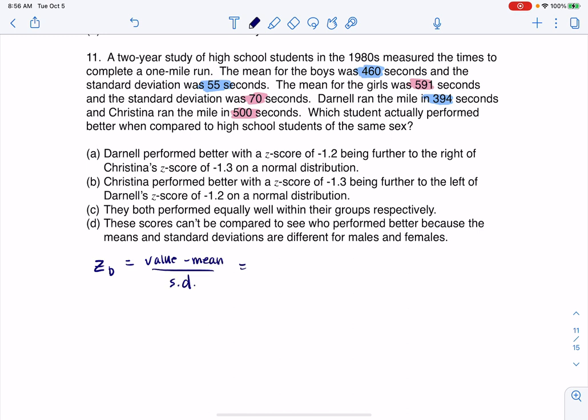So in this case, Darnell ran the mile 394 minus 460, and that standard deviation was 55. And actually, this is a good thing for Darnell. He ran it under average, which is good when you're talking about running, because lower times indicate faster runners. So Darnell's z-score was negative 1.2.